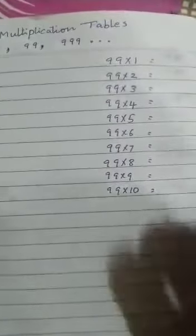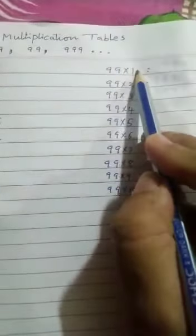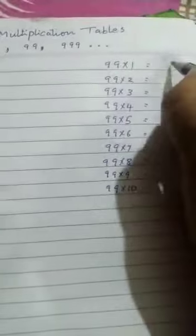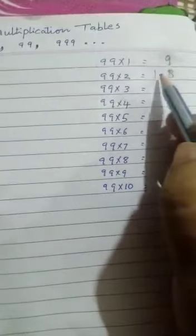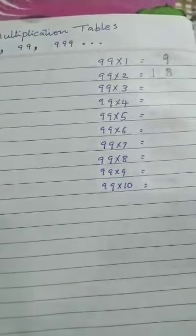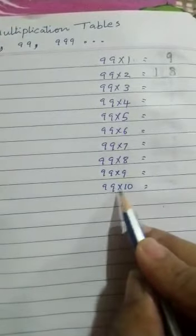Let me tell you another table, the table of 99. Here also, you are going to write the product of the table of 9 but leaving some gap. You are leaving a gap between 1 and 8. You are going to follow the same pattern till 99 into 10. Okay, let us start.